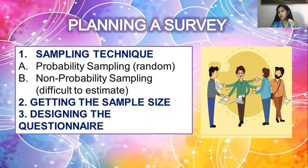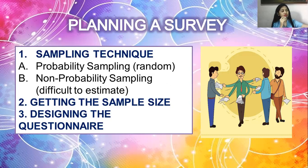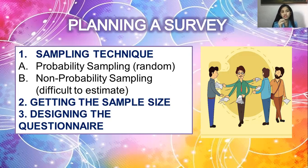The second preparation is getting the sample size — you need to determine how many participants are needed. The last preparation is designing the questionnaire, which is the most sensitive part of planning a survey. You need to be sensitive; for example, when asking about gender, you can no longer just put 'boy' or 'girl' — you should use 'male' or 'female,' because in other countries it's not just boy and girl; there is the LGBT community. The content of your questionnaire must be sensitive.